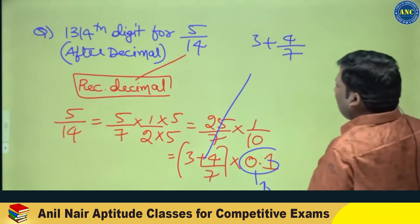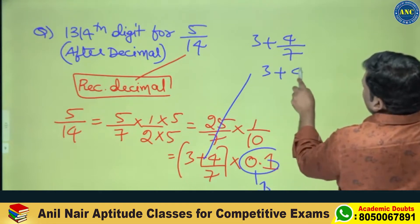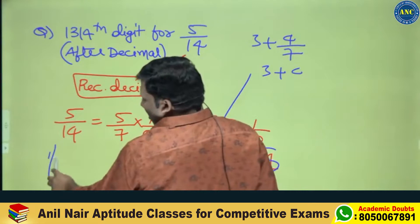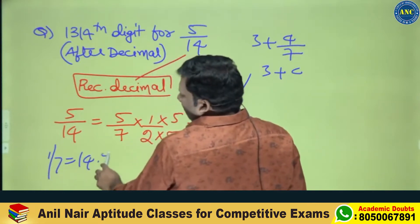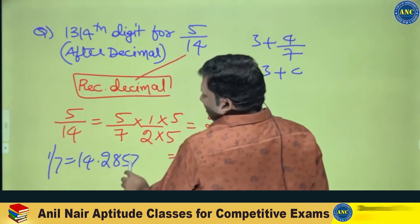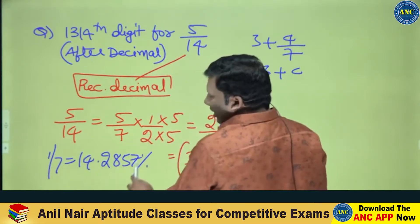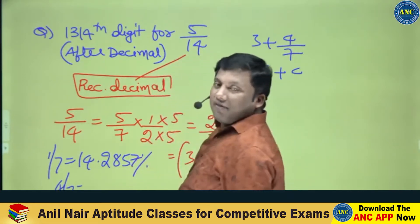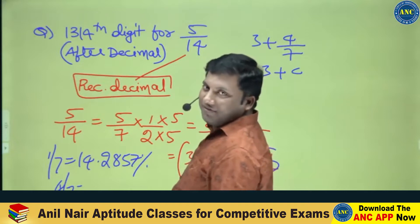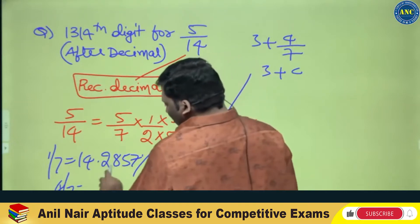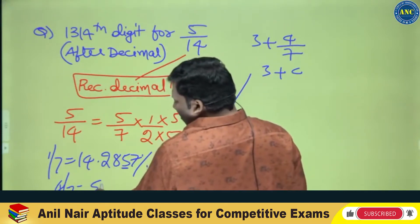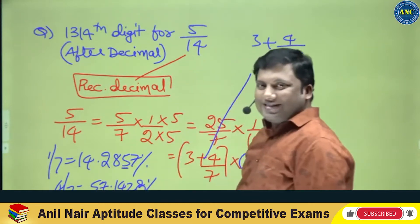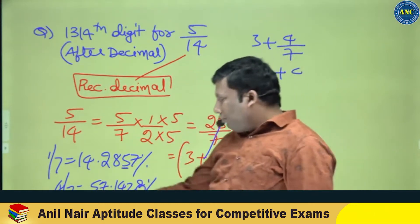If the denominator is 7, it will go in a multiple of 6 repeating digits. I already told you a shortcut in ratios: 1 by 7 is 0.142857 — 6 digits will get repeated. I want 4 by 7. Take the numerator 4: 4 tens are 40; 7 goes 5 times in 40. Write down this 5 and the next digit.